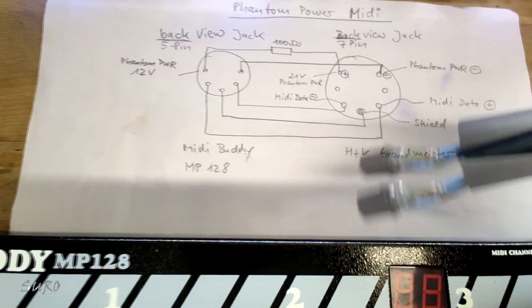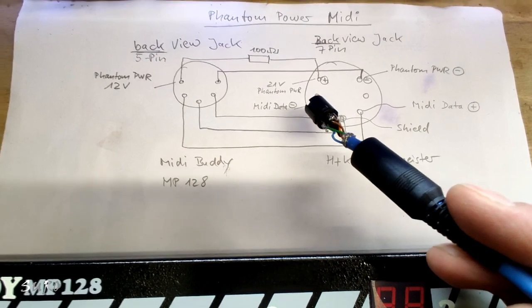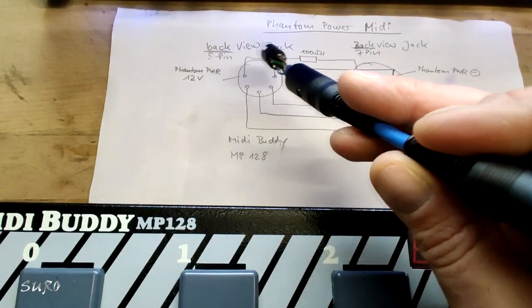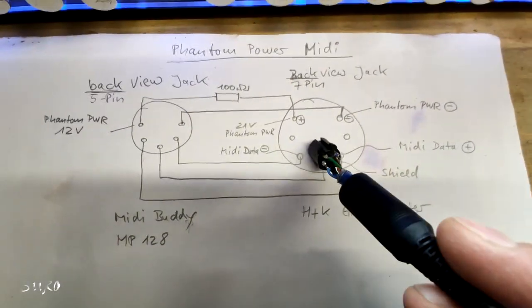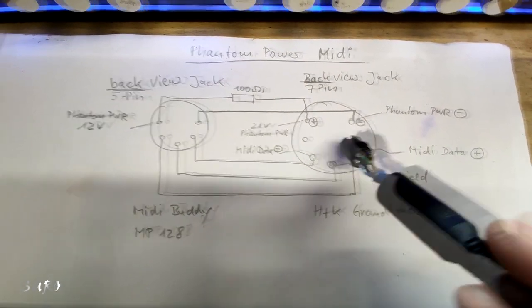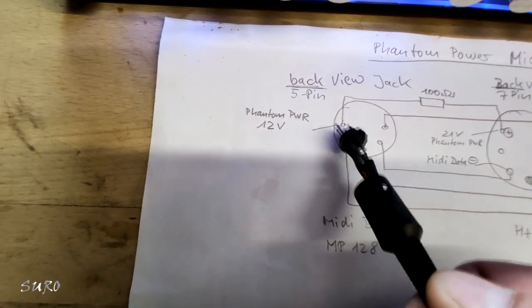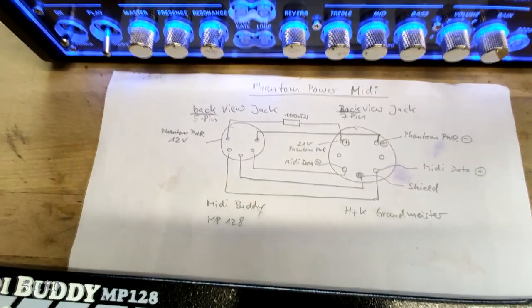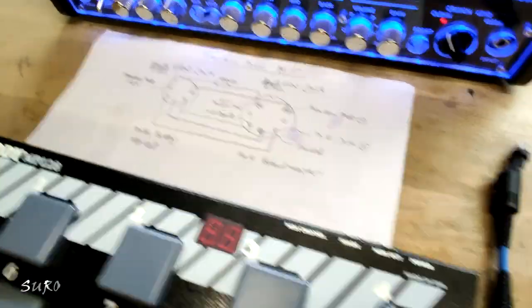This is what the 5-pin is, and this is what the 7-pin looks like. Be careful, this is the back view of these jacks. So if you look on the jack like this, this is how the connection should be, and then when we power it up I'll show you that.